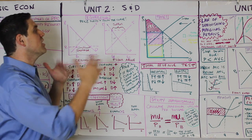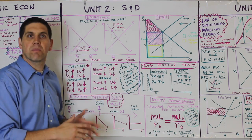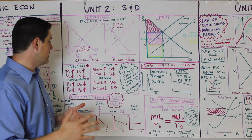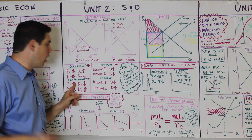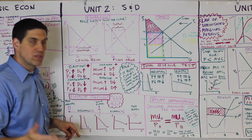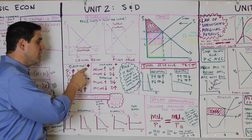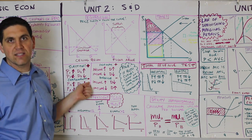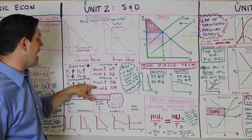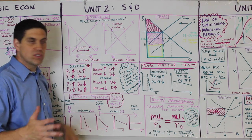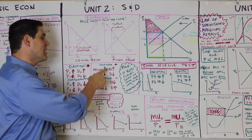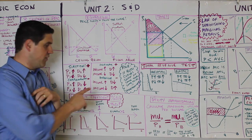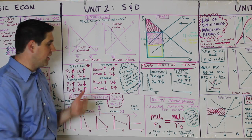Another key concept is shifting the curve. There are five shifters of demand and six shifters of supply. Make sure to draw on a free response what happens to price and quantity when you draw a shift. There are substitutes and complements — when the price of one goes up and the demand for the other goes up, that makes them substitutes, which has a positive cross-price elasticity coefficient. Complements have a negative cross-price elasticity coefficient. For income elasticity: if income goes up and people buy more, it's a positive coefficient — a normal good. A negative income elasticity coefficient means it's an inferior good.